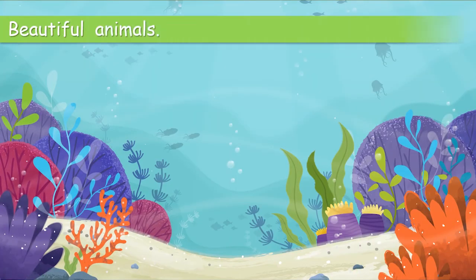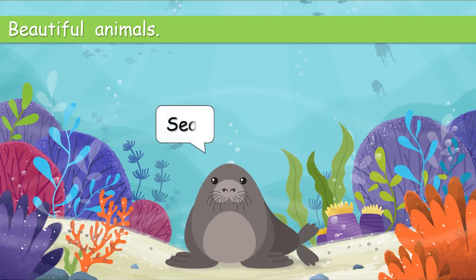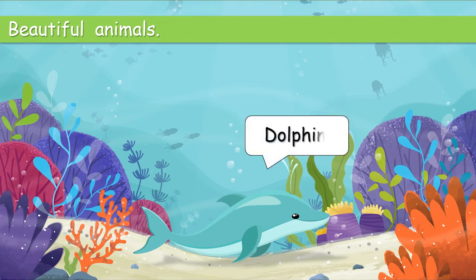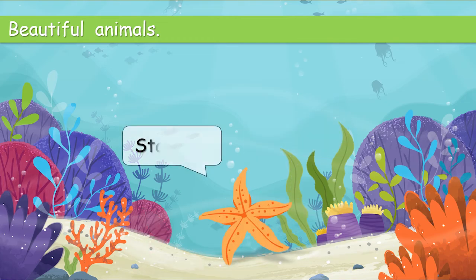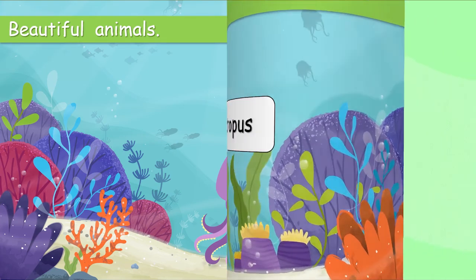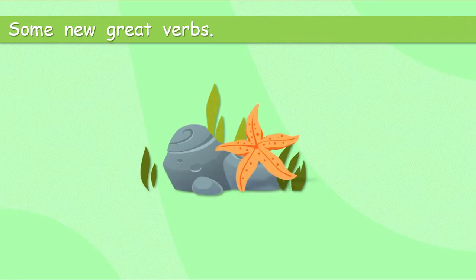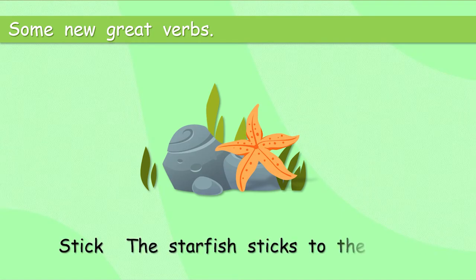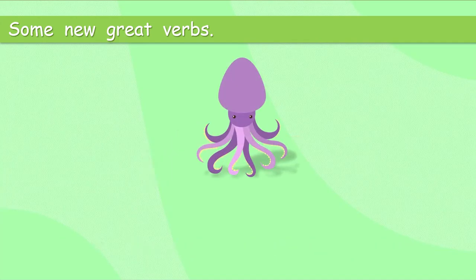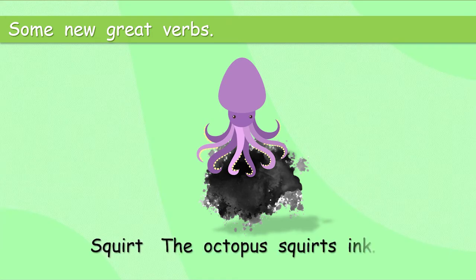Wow, some beautiful animals. We looked in the sea. Oh, yes. We looked at a seal. We looked at a dolphin. We looked at a starfish. So beautiful. And an octopus. And we had some great new verbs. Stick. The starfish sticks to the rock. Great verb. An octopus. What does he do? Squirt. The octopus squirts ink. Wow.